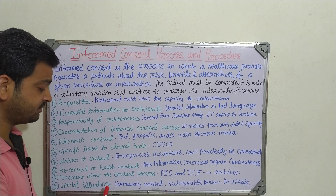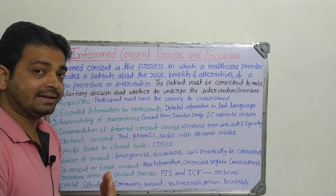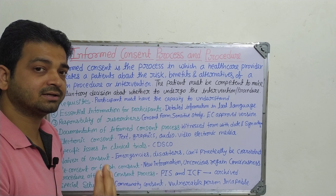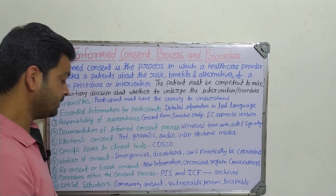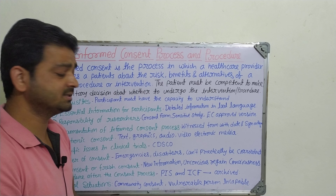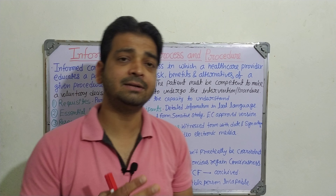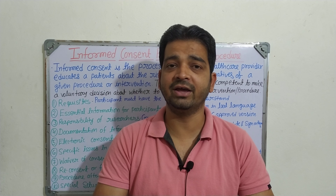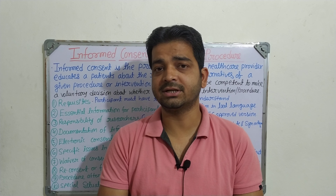Then special situations — for example, community consent: sometimes one person who is going to be a participant may agree, but the community from where he belongs may not agree. So in that situation the particular research team has to take consent from that particular community. Then there is the vulnerable or incapable person — sometimes they agree but during the study they may become incapable or some other problem arises. Those come under special situations. Basically, the informed consent process and procedure requires that the person who is going to be the participant of the clinical trial should be aware, and the research team and responsible committee for the conduct of the clinical trial should fulfill their responsibilities.